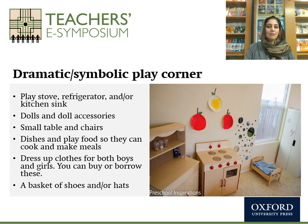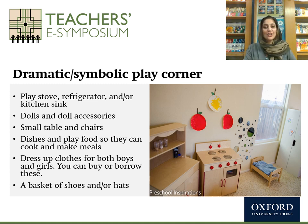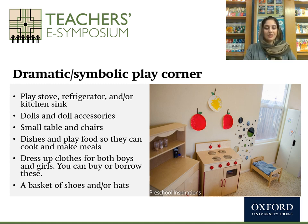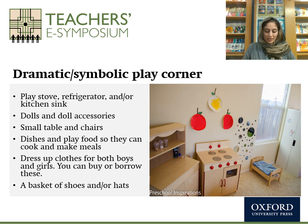For the dramatic symbolic play corner, you can have a play stove, refrigerator or kitchen sink, dolls and doll accessories, small table and chairs, dishes and play food so that they can cook and make meals, dress-up clothes for both boys and girls — you can buy or borrow these — a basket of shoes or hats, and props they can use. These are things they can use to dress up, role-play, and act out scenarios. This helps you develop your dramatic or symbolic play corner.